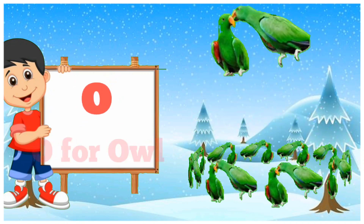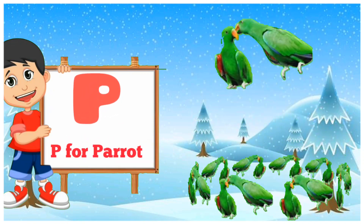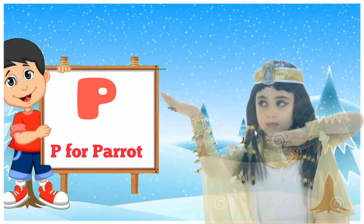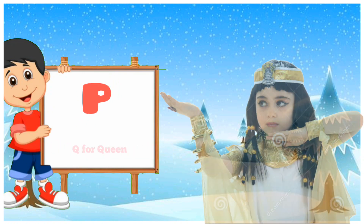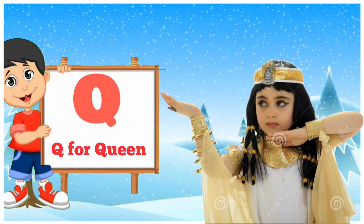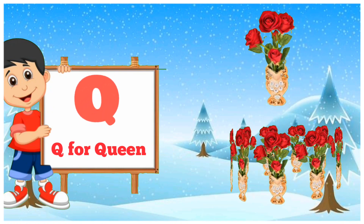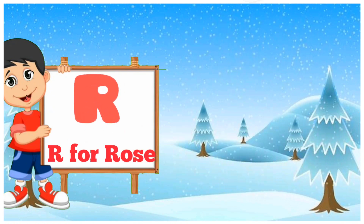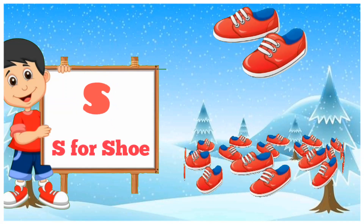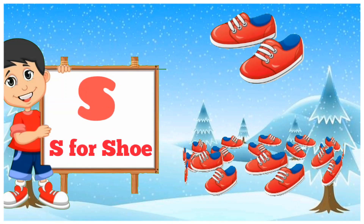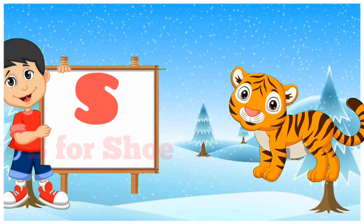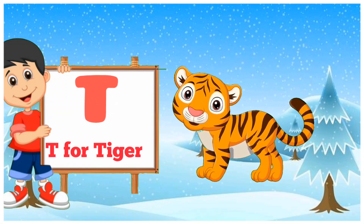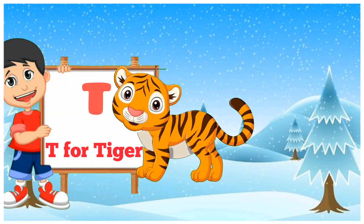P for parrot, U for queen, R for rose, S for shoe, G for tiger.